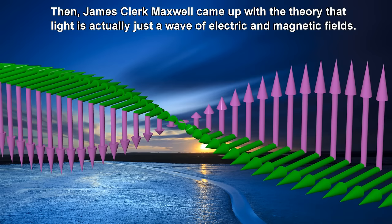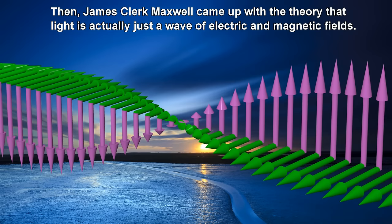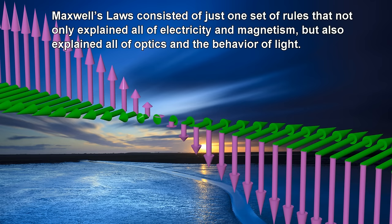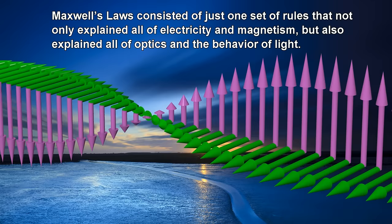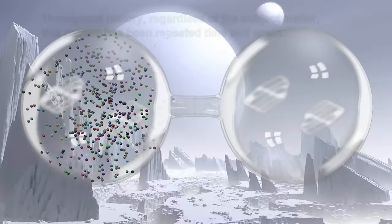Then James Clerk Maxwell came up with the theory that light is actually just a wave of electric and magnetic fields. Maxwell's laws consisted of just one set of rules that not only explained all of electricity and magnetism, but also explained all of optics and the behavior of light.